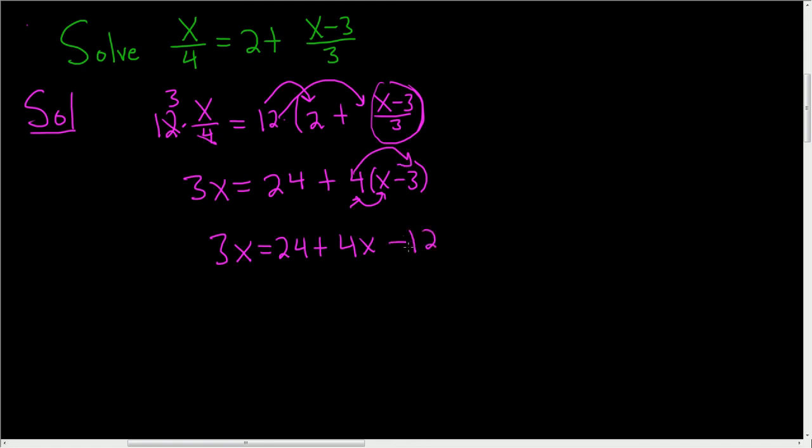Let's combine like terms. So 3x equals now 24 minus 12 is 12, and then we still have the 4x, so plus 4x.